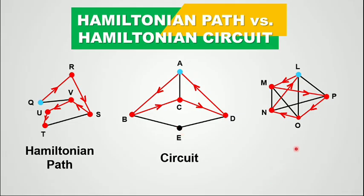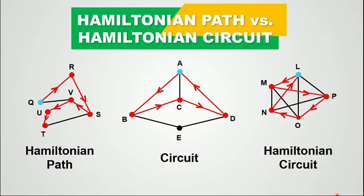How about the third graph? Is the route in the third graph a Hamiltonian path or a Hamiltonian circuit? Definitely this is a Hamiltonian circuit. As you can see, we started from vertex L and then go to M, to P, to O, to N, and then go back to vertex L. We passed through all the vertices of the graph exactly once, and we started and ended at the same vertex.